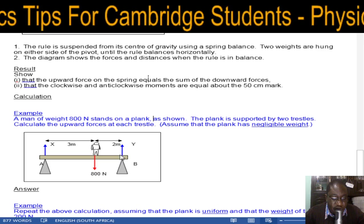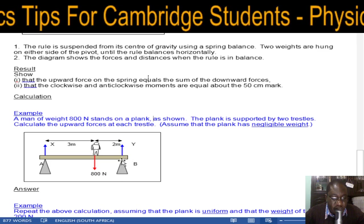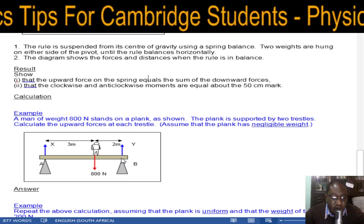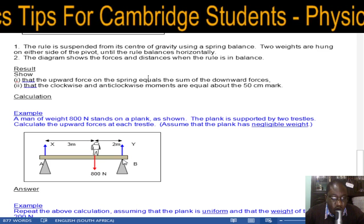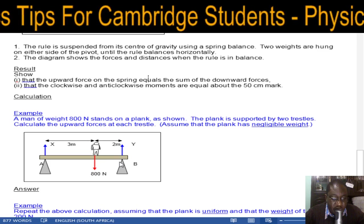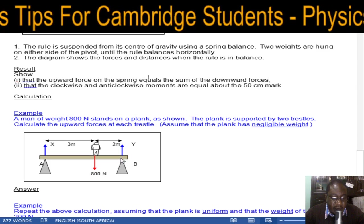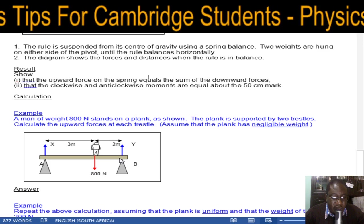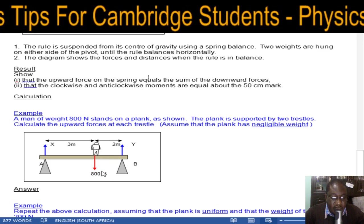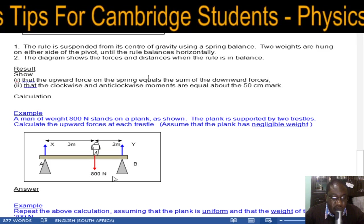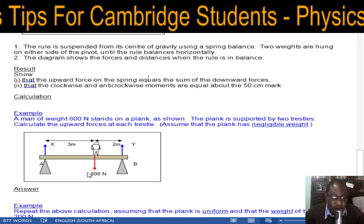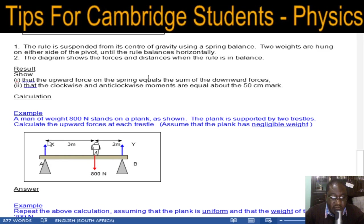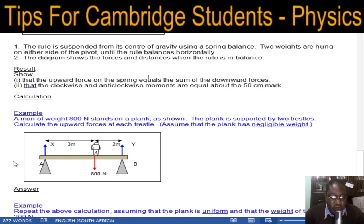This is your pivot, so we're now considering clockwise and anticlockwise moments about this pivot. If you hold here and look at the weight of the man going down, it has a tendency of making this go this way, so that's an anticlockwise moment. Whereas this force X is going up, and from this pivot it's a clockwise moment going the other way.